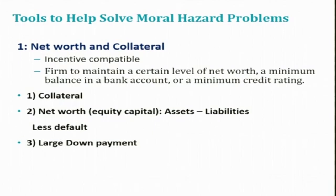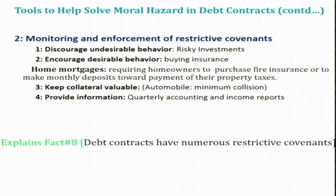The second tool is monitoring and enforcement of restrictive covenants. Debt contracts are full of restrictive covenants. Covenants can be designed to lower moral hazard by keeping the borrower from engaging in the undesirable behavior of undertaking risky investment projects. Some covenants mandate that a loan be used only to finance specific activities, such as the purchase of particular equipment or inventories — the loan can be used only for that specific purpose, and only then will the loan amount be disbursed.